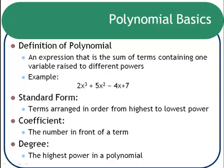A polynomial is an expression that is the sum of terms that have different variables raised to different powers. An example is listed here, 2x cubed plus 5x squared minus 4x plus 7.